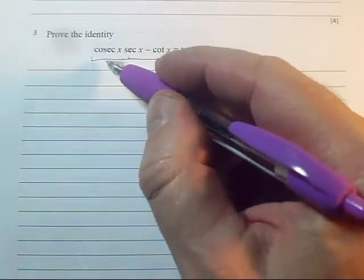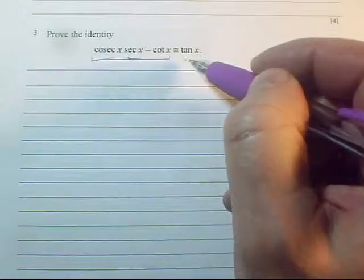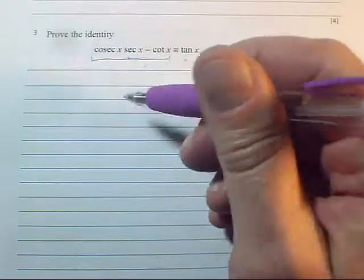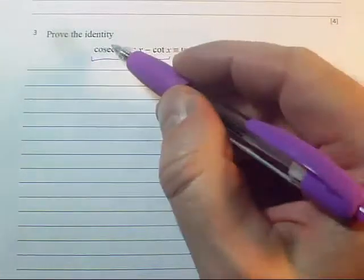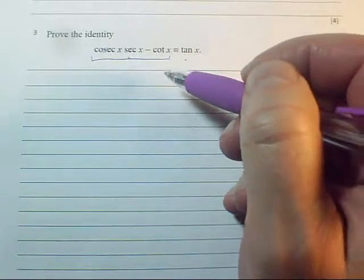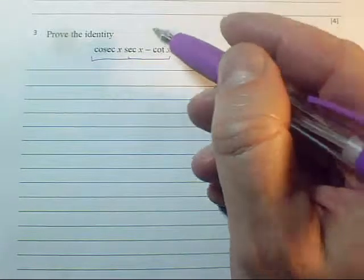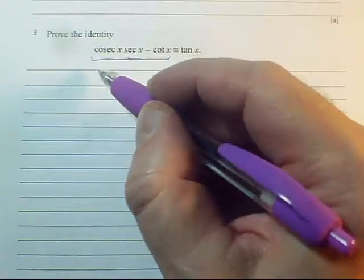So we've got lots of different trig functions going on here. None of them are being squared and there aren't any twos involved. So it really looks like we're not going to have to use, at least not to begin with, any of the special identities.